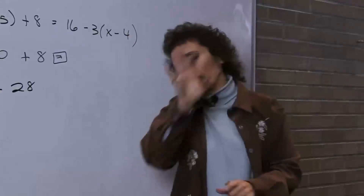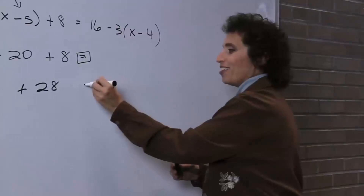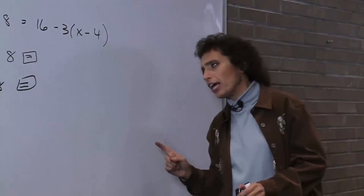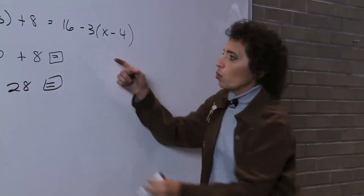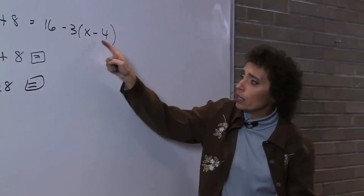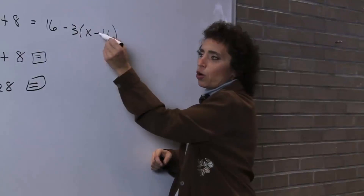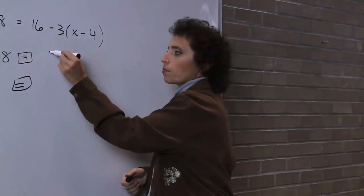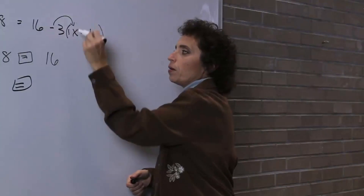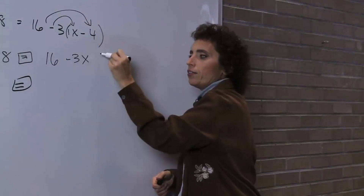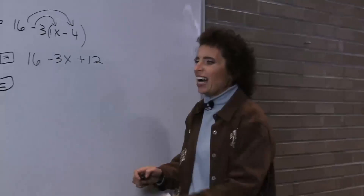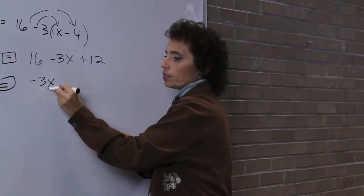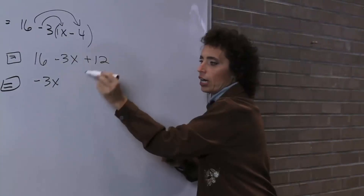Negative 8x has no friends so it just stays, but I can combine 20 and 8. I have 20, I have 8, so I have 28. Now let's look at the right side. Inside the parentheses, nothing to combine because they're not like terms. But I have multiplication — distributive property. Be careful again because you're distributing the negative, so it's going to change all the signs. There's a 1 there you don't see. Negative 3 times 1 is negative 3x. A negative times a negative is a positive 12.